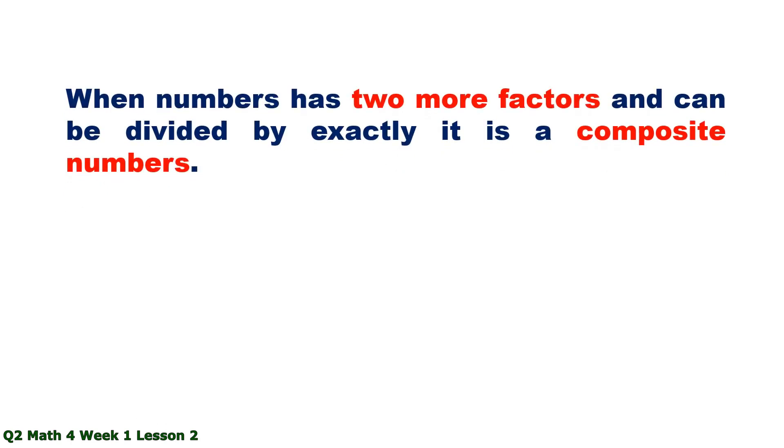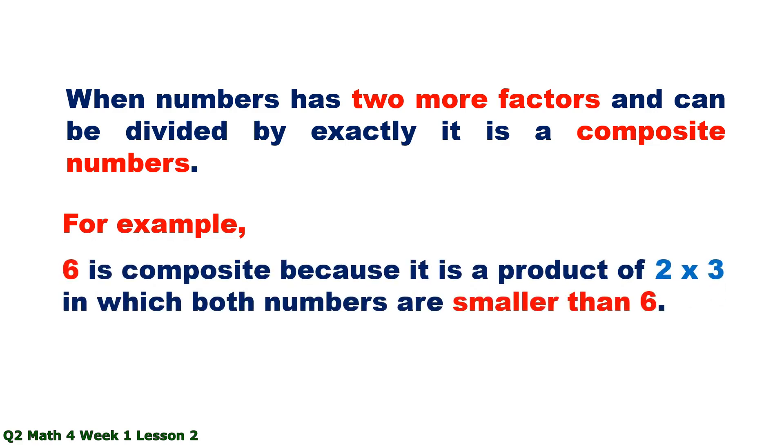When numbers have two or more factors and can be divided exactly, it is a composite number. For example, 6 is composite because it is a product of 2 times 3, in which both numbers are smaller than 6.